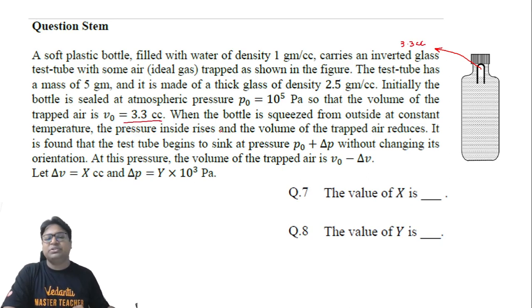The question also tells us that the mass of the test tube is 5 grams and the density is 2.5 grams per cc, which basically means the volume of the material, or volume of the glass of this test tube.